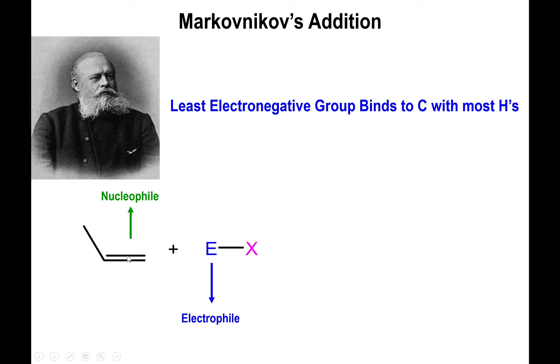And that's to say that on this alkene, the carbon of the alkene on the left side only has one hydrogen bound to it, but the carbon of the alkene on the right side has two hydrogens bound to it. So assuming that E is the least electronegative element between these two, E will end up being bound to the carbon on the right side, which is the one that has the most Hs. And X will then bind to the carbon on the left side.